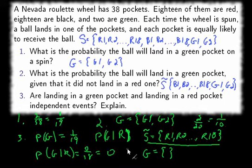And now we compare. We need to compare the probability of G, P of G, and P of G given R. One of them is 1 over 19, the other one is 0. So the answer is no. They are not independent because the occurrence of a red pocket affected the probability of landing in a green pocket. It went from 1 over 19 to 0. Those are not the same. So they are not independent.